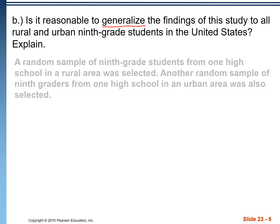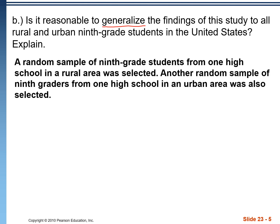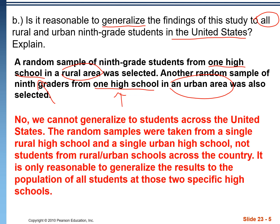This did have randomization, but the key thing — here's the text of the problem — it says that we have a random sample of ninth grade students from one high school in that rural area, and then another sample from one high school in an urban area. So the population is not all students in the United States; it's specific to these high schools and only these high schools. We can't generalize our sample beyond the population we're drawing from. No, we can't generalize this. The random samples were taken from a single rural high school and a single urban high school. We can generalize to those populations only, meaning these findings would apply to all the students in each of those two high schools.